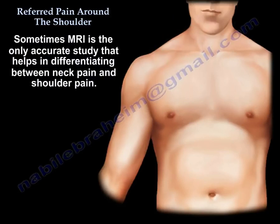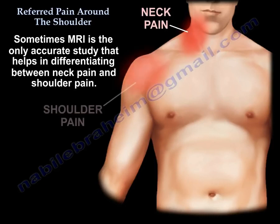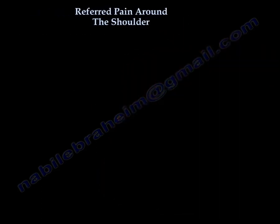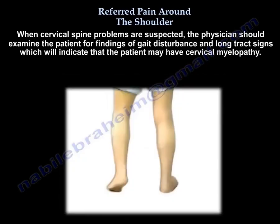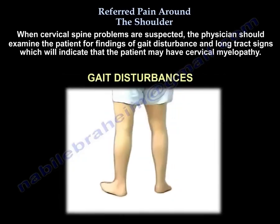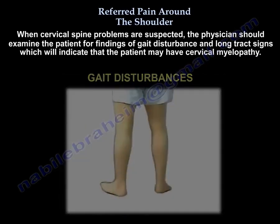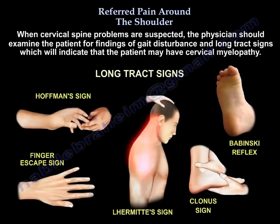Sometimes MRI is the only accurate study that helps in differentiating between neck pain and shoulder pain. When you suspect C-spine problems, the physician should examine the patient for findings of gait disturbance and long-track signs, which will indicate the patient may have cervical myelopathy.